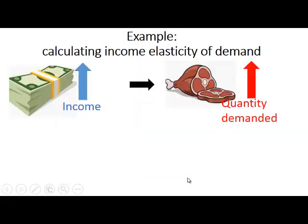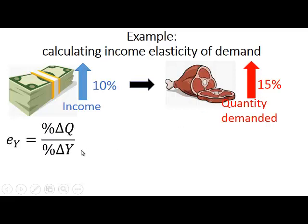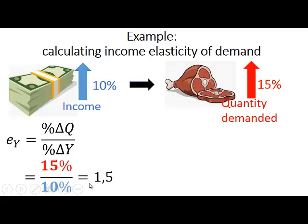Let's look at an example. If the income of consumers increases by 10% and the quantity demanded of beef increases by 15%, we use the formula: percentage change in quantity demanded divided by percentage change in income. So 15% divided by 10% gives us 1.5.